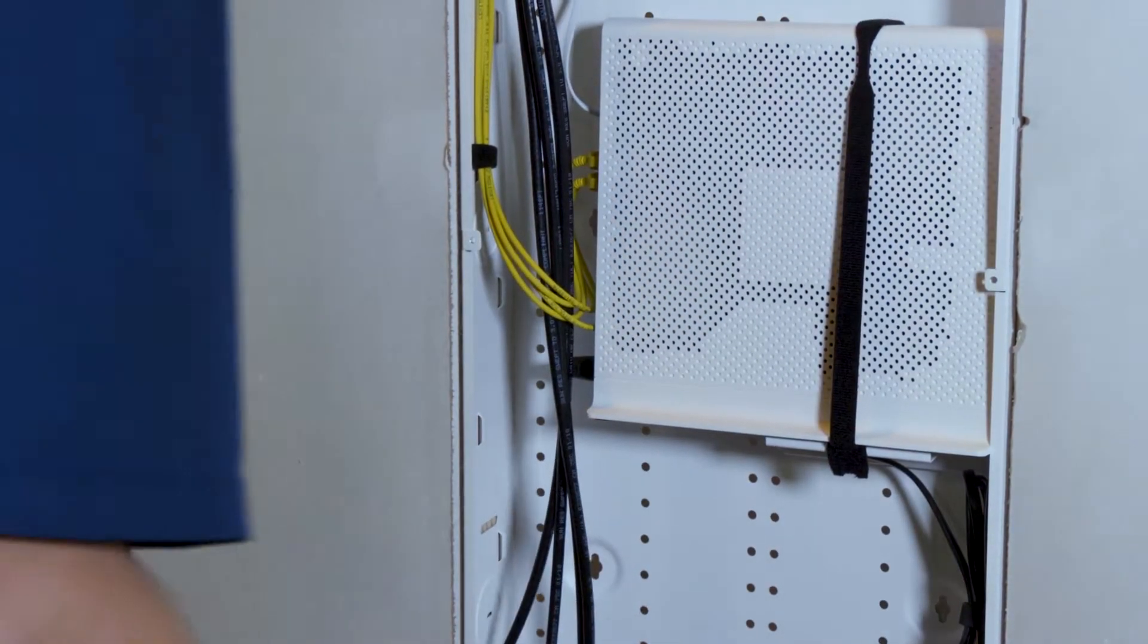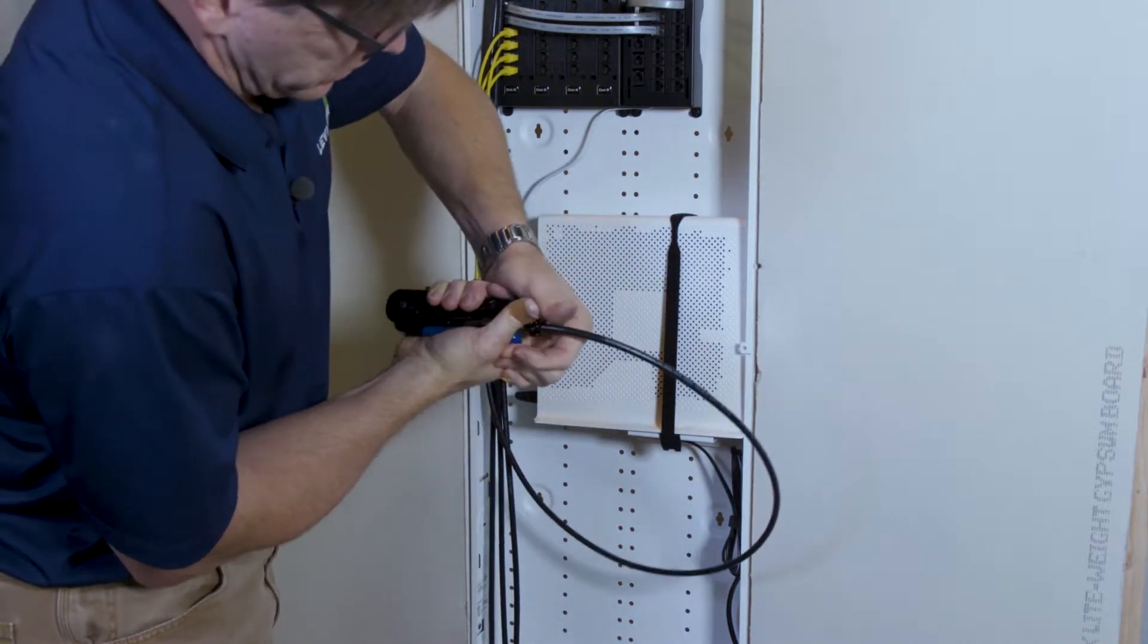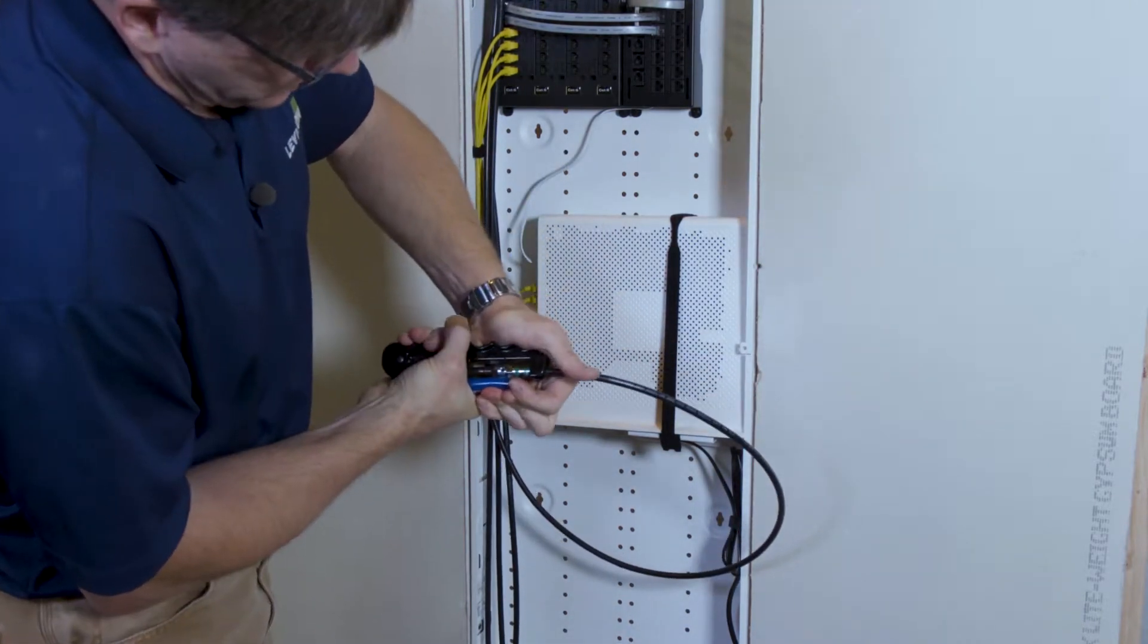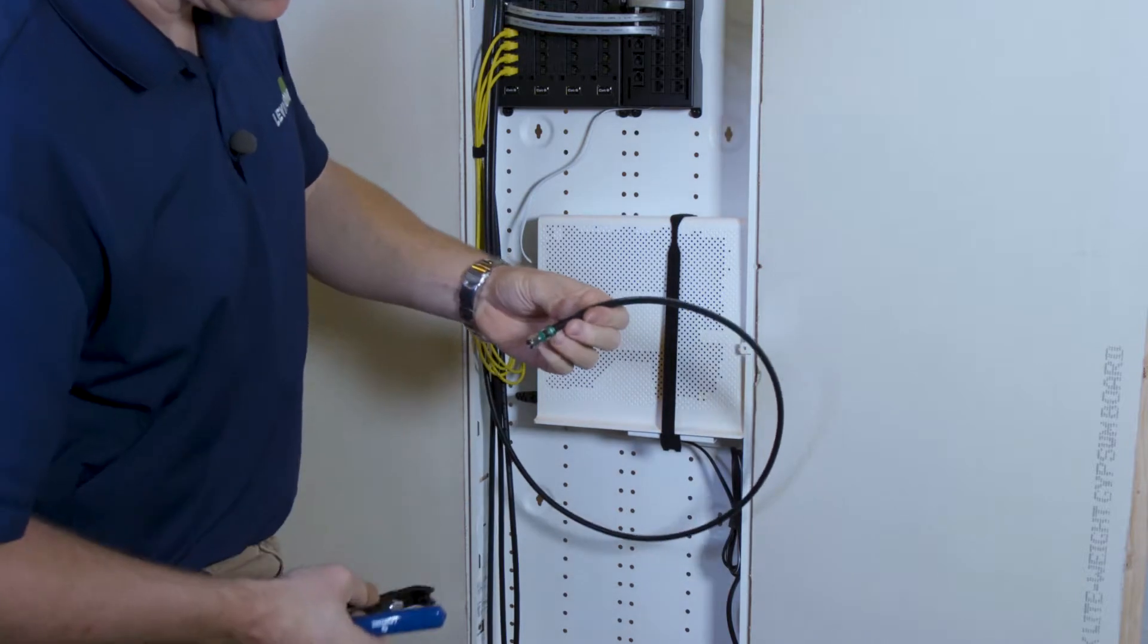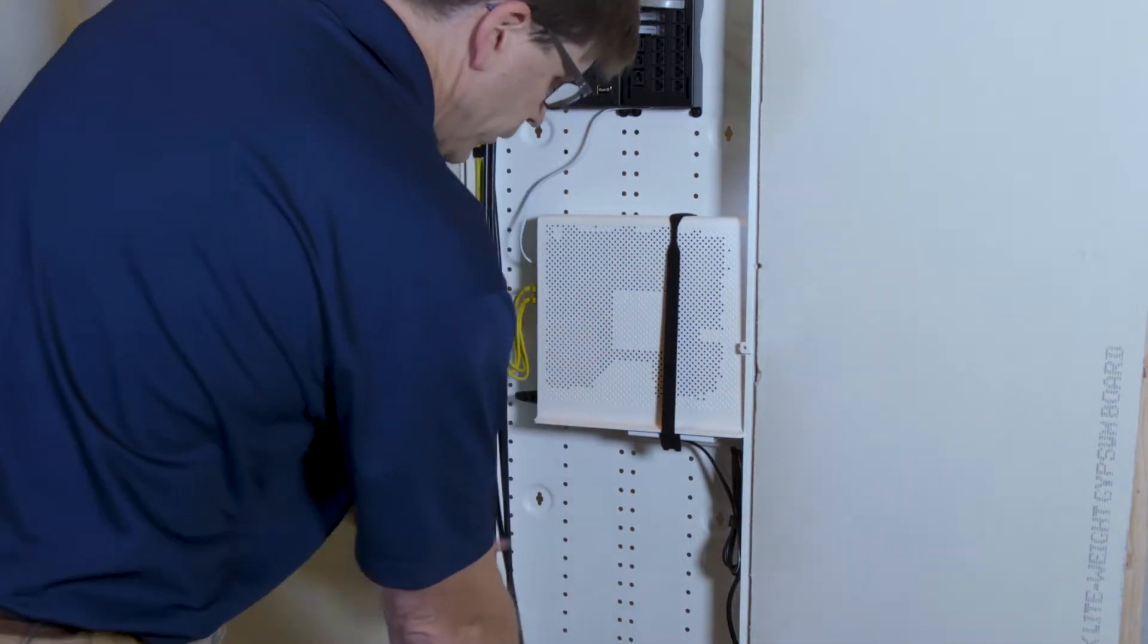I'll repeat that for the other four conductors. So at this point we're going to crimp it together or crush it together using the compression fitting. That's it. All right. So now we have four terminated cables.